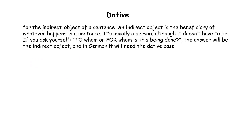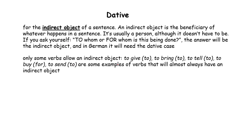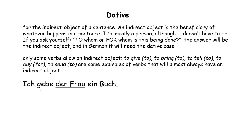Dative is the indirect object of a sentence. There are certain verbs that take to give, to bring, to tell, to buy, and to send. When we use these verbs in German and a person comes after them, then it is dative. If a thing comes after them, then it is accusative.